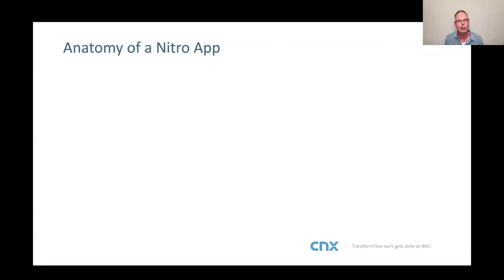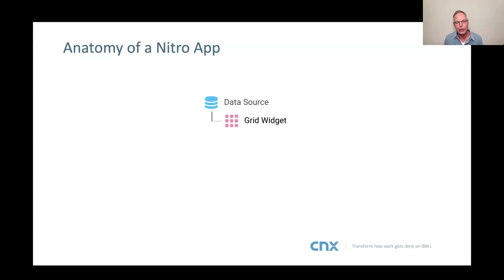Now I'll move into a little technical explanation to set up Sean's demo. When creating a Nitro app, the first thing you'll see Sean do is create a data source — not creating a data table, but defining how you get to the data, like an SQL statement. You can use a wizard in Valence to create what we call a data source, which is really just the definition of where your data is. Then you can attach visual widgets — like a grid widget, which is sort of like a subfile, or a chart — and you can have more than one graphical element attached to the same data source.